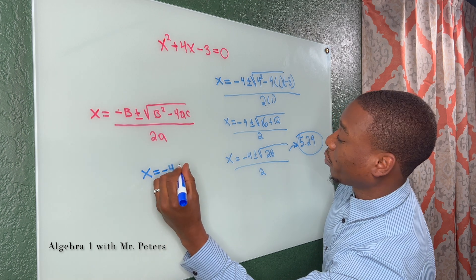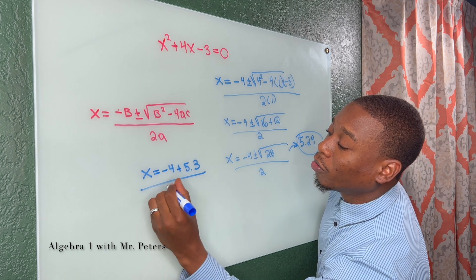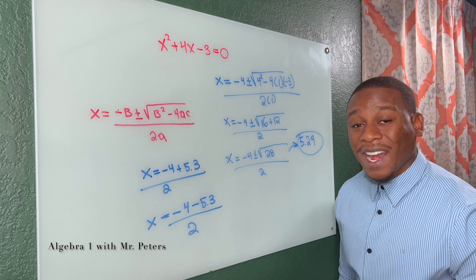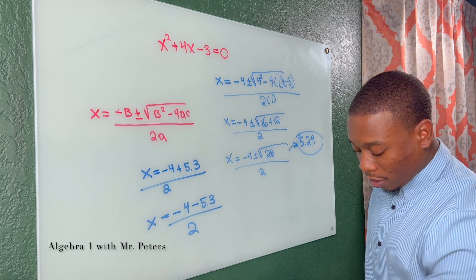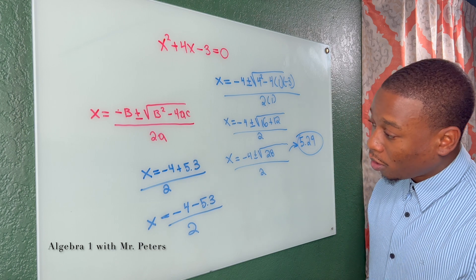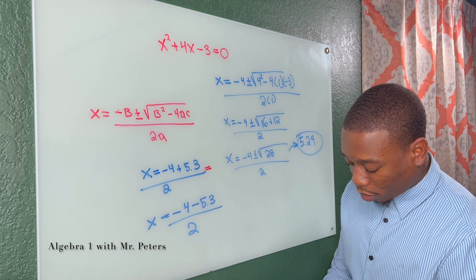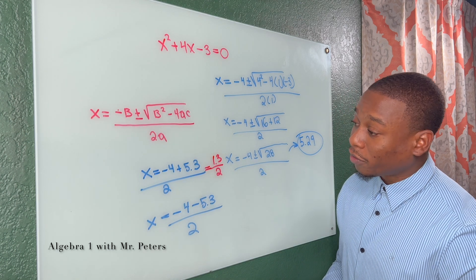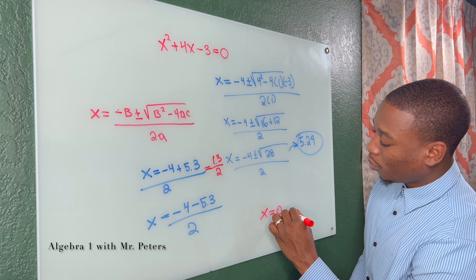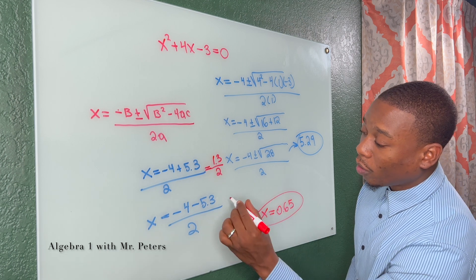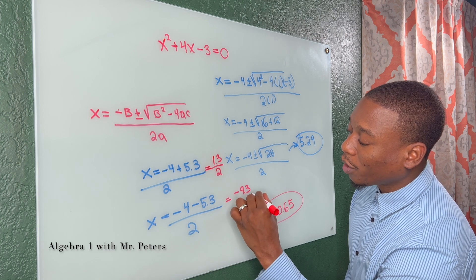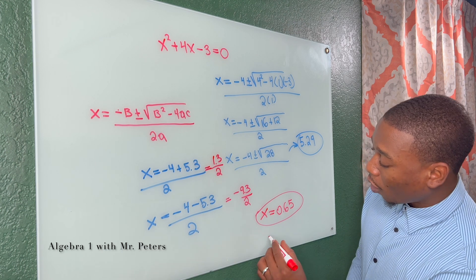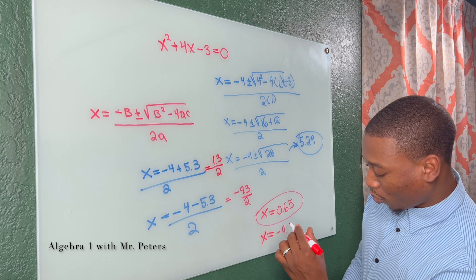So now that I know that let's set up our equations. X is equal to negative four plus 5.3 over two. And we have x is equal to negative four minus 5.3 over two. And now we could solve. So now when I do this, we're going to get positive 1.3 over two. So that's going to give us x is equal to 0.65. And then once we go back, we have negative 9.3 over two when we combine the top.